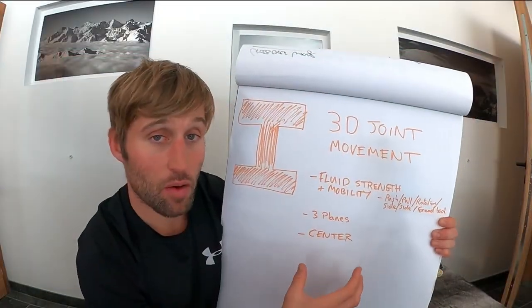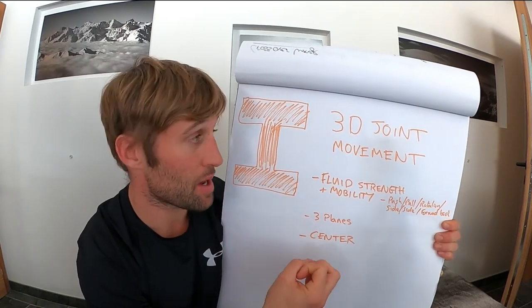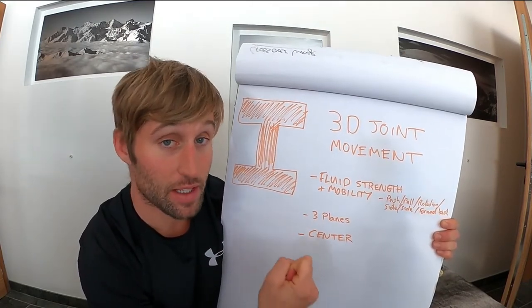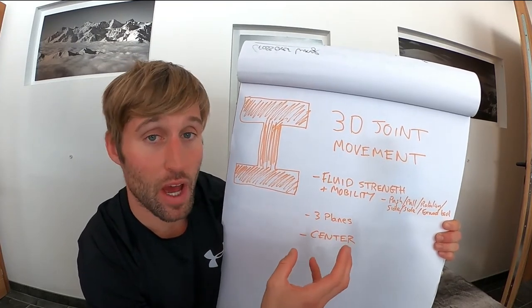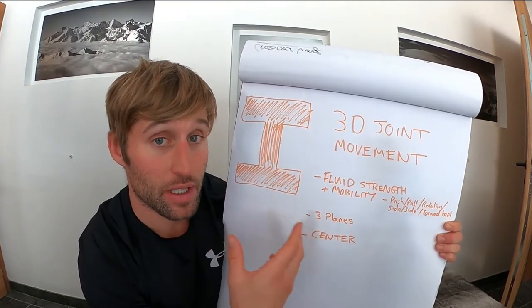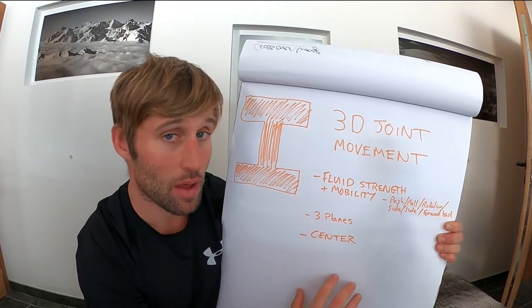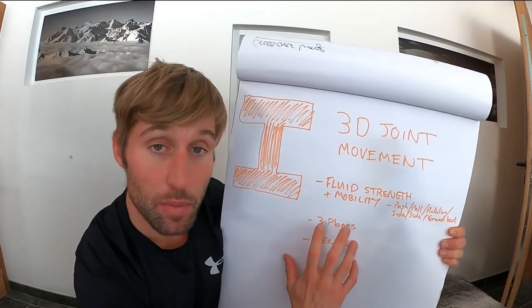One of the pillars of the 3D skier matrix that make up a robust athletic skier is joint movement. I'm moving in three dimensions. Now what I mean about three dimensions is the three planes of movement.